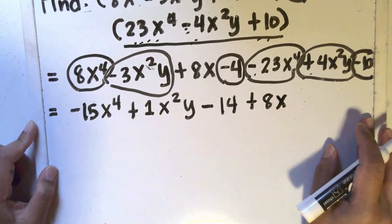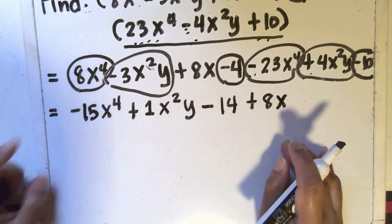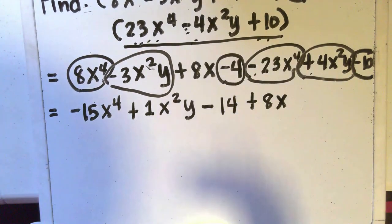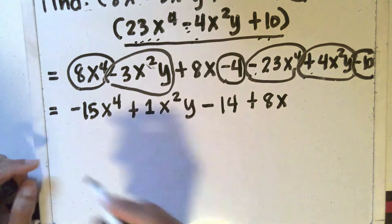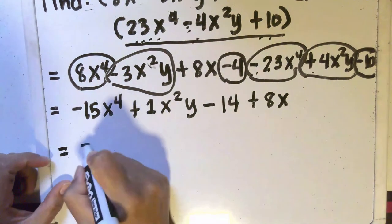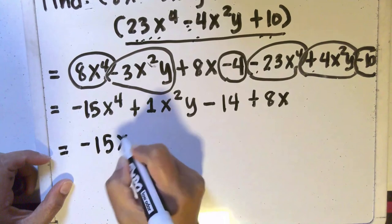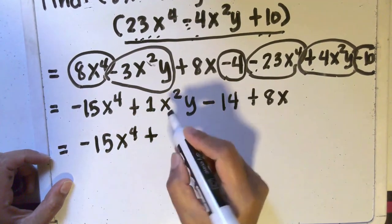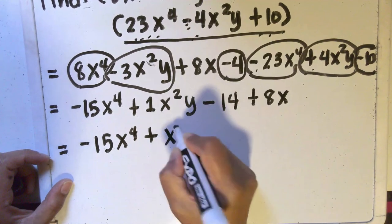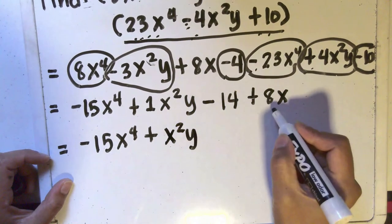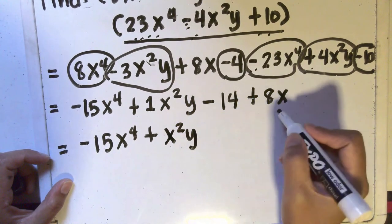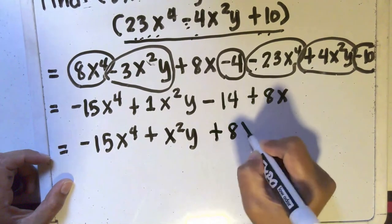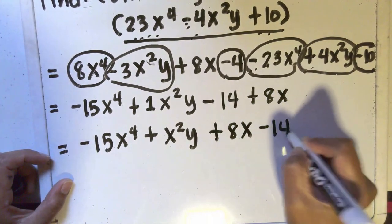Now if your teacher is very specific about the arrangement of the terms based on the power of the variables, you can actually simply write this as negative 15x to the fourth plus x squared y, and then instead of writing minus 14, you can write plus 8x first and then minus 14 last.